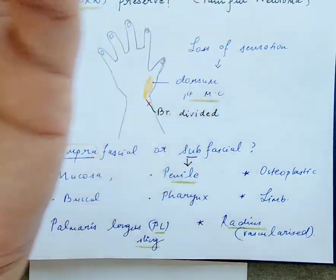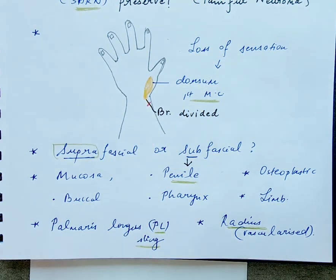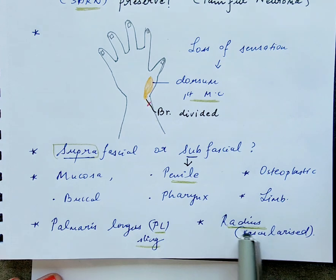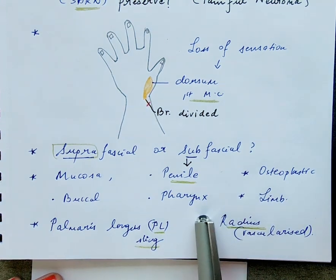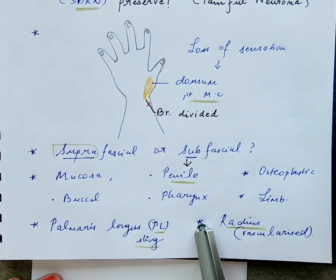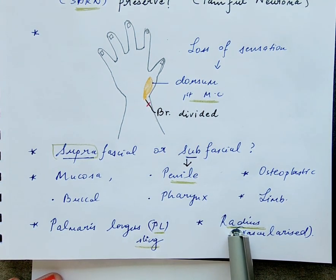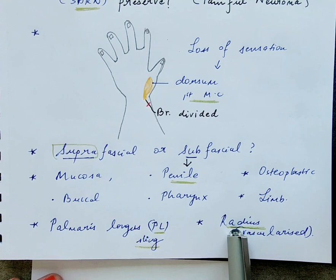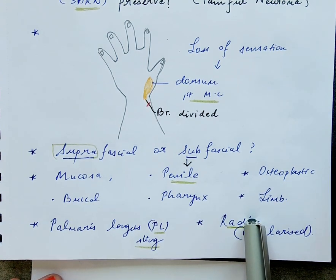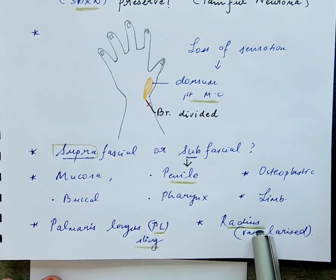However, the palmaris longus may not be present in all patients, and a test must be done to confirm its presence. The radius bone can also be harvested in a vascularized fashion for reconstruction, and can be taken in a pedicled form for osteoplastic reconstruction.